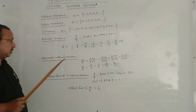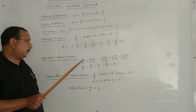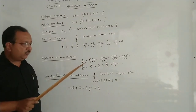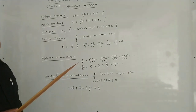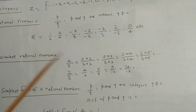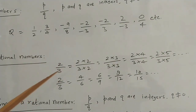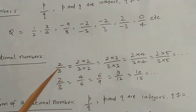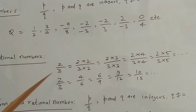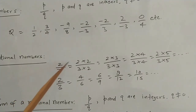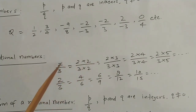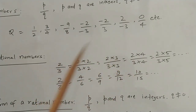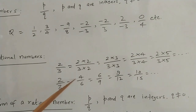Now, equivalent rational numbers. If we multiply the numerator and denominator of a rational number by the same non-zero number, we get an equivalent rational number. For example, for the rational number 2/3: multiplying by 2 gives 4/6; multiplying by 3 gives 6/9; multiplying by 4 gives 8/12; multiplying by 5 gives 10/15. So 2/3 is equivalent to 4/6, equivalent to 6/9, and so on.